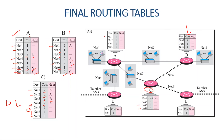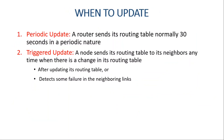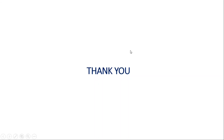The next portion is when to update the routing table. The first method is periodic update, where a router sends its routing table normally every 30 seconds. The second is triggered update, where a node sends its routing table to its neighbors any time there is a change in its routing table — meaning whenever there is a change in the network, routers are triggered to send their routing tables to all neighbors. Thank you very much, this will be all for today's class.